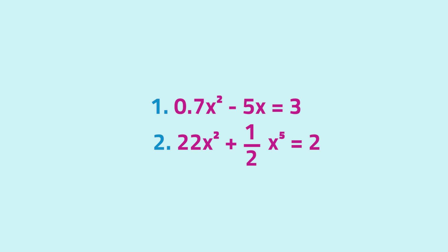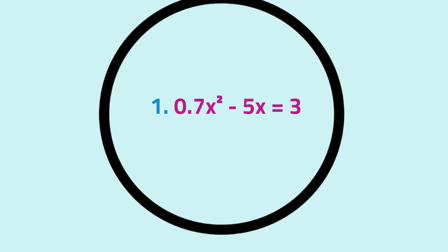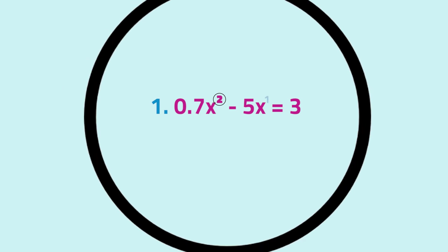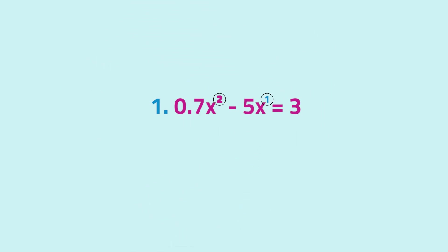Now, let's check out some examples and see if they are quadratic equations or not. In the first equation, see that the variables have 2 or 1 as the exponents. Take note that we do not write a superscript 1 to signify the exponent 1.